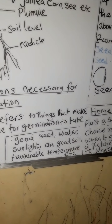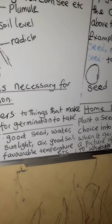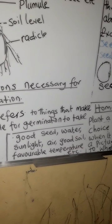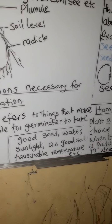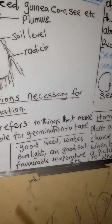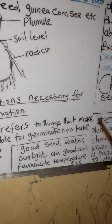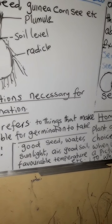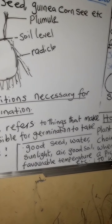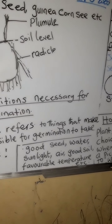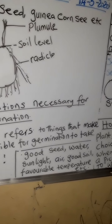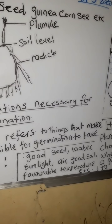Also, good soil is necessary for the plant. If you plant in bad soil, germination will not take place. Another condition is favorable temperature — the temperature should be good. A plant like pepper does not need too much heat, and you don't need too much water either.